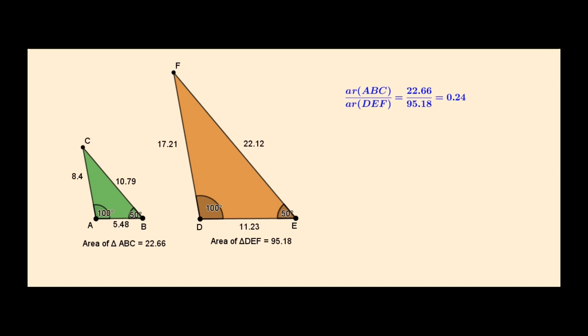Now let us consider the ratio of the squares of the corresponding sides of these triangles — that is, AB squared by DE squared. On simplification, I have this value on the RHS, which is 0.24.